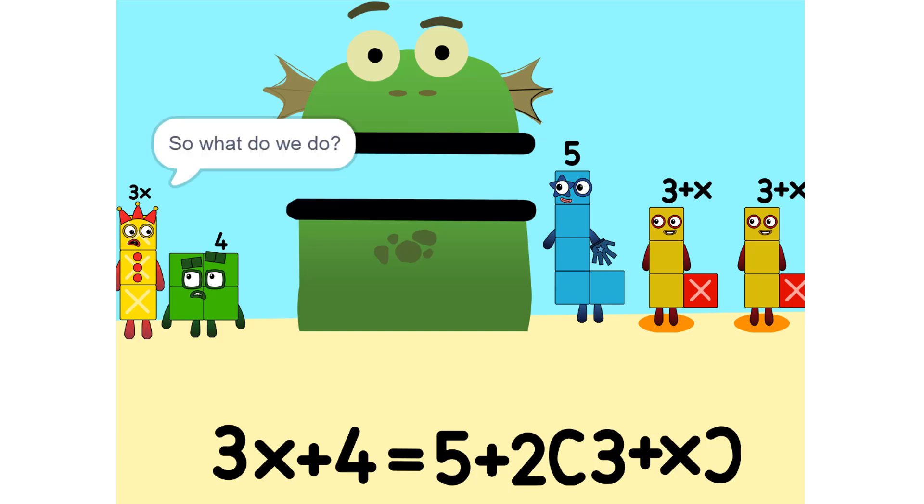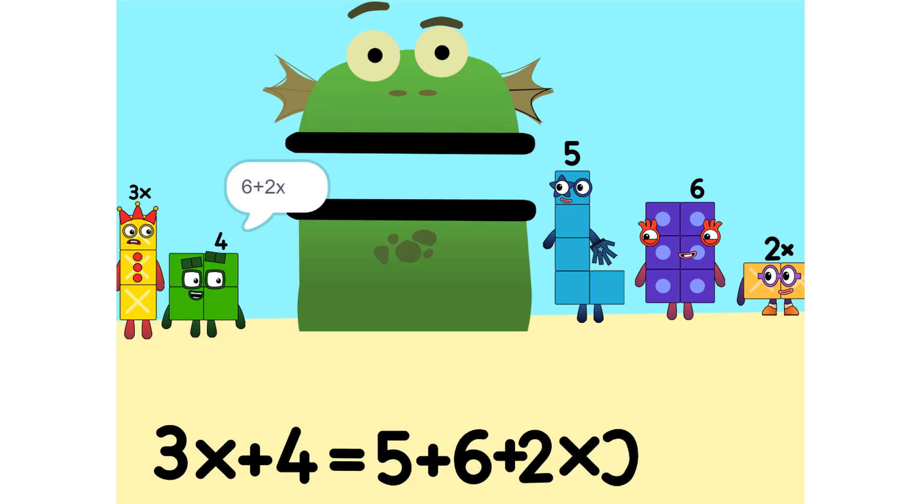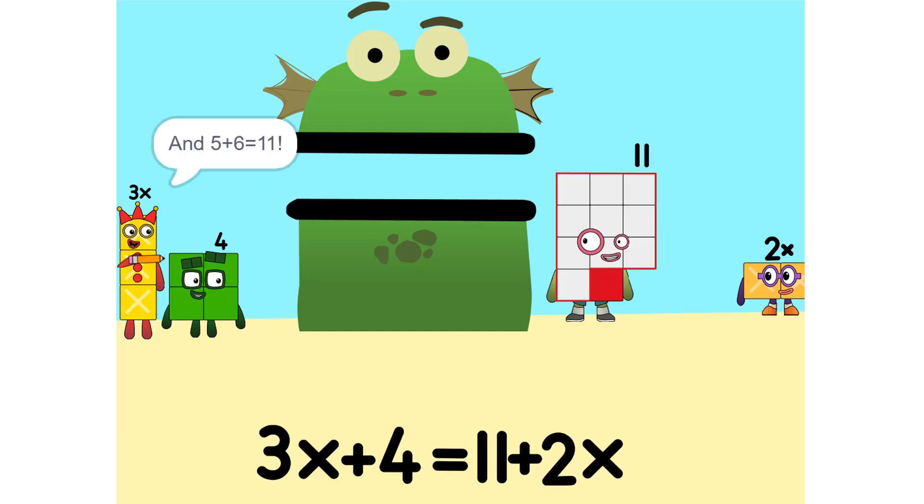Okay. See the 2 times 3 plus X? That's the same as 2 times 3 plus 2 times X, which is 6 plus 2X. Oh, and 5 plus 6 is 11. Yeah.